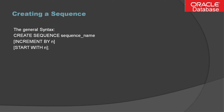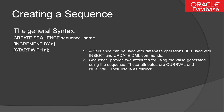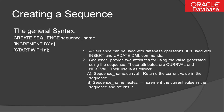Key points to keep in mind: a sequence can be used with INSERT or UPDATE DML commands. A sequence provides two attributes for using the generated value — CURRVAL, which returns the current value in the sequence, and NEXTVAL, which increments the current value and returns the next value. They are used as: sequence_name.CURRVAL and sequence_name.NEXTVAL.